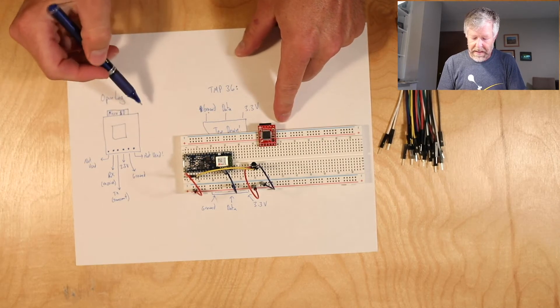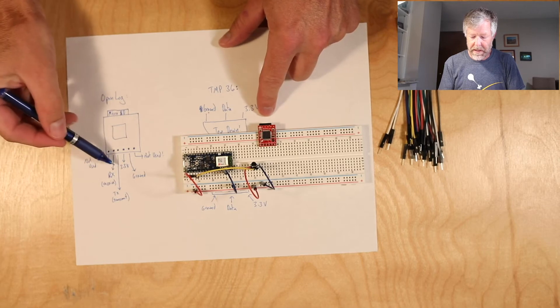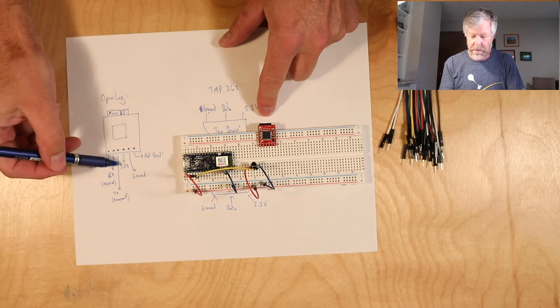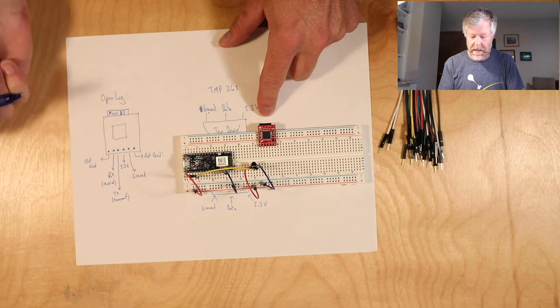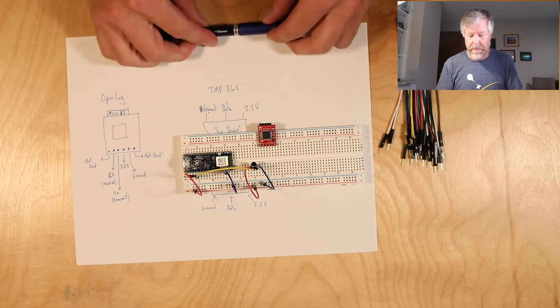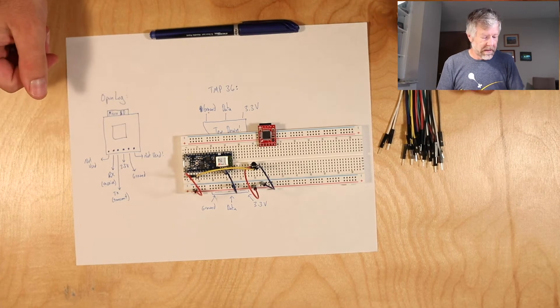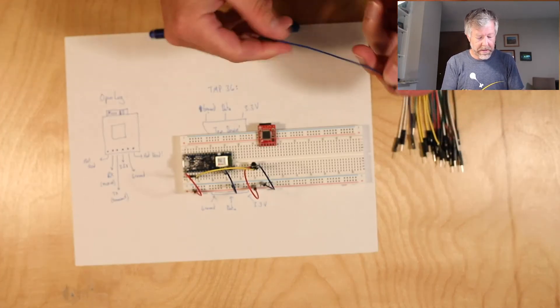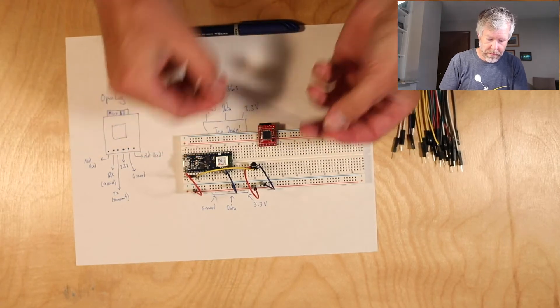Are all the pins there, and so this is how they're labeled here: RX, TX, 3.3, ground, and not used. All right, so let's hook up the ground first. Ground, remember we had our blue wires.